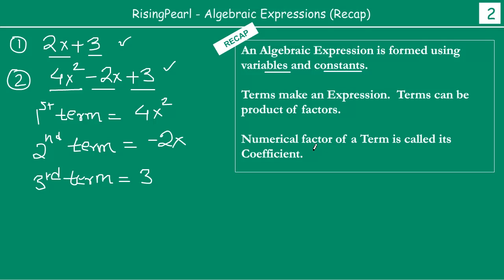Now, the numerical factor of a term is called its coefficient. So let's say we look at the second term. We see second term as minus 2x. We can write this as minus 2 times x. This minus 2 is the numerical component of the second term. So this is why minus 2 actually is a coefficient.